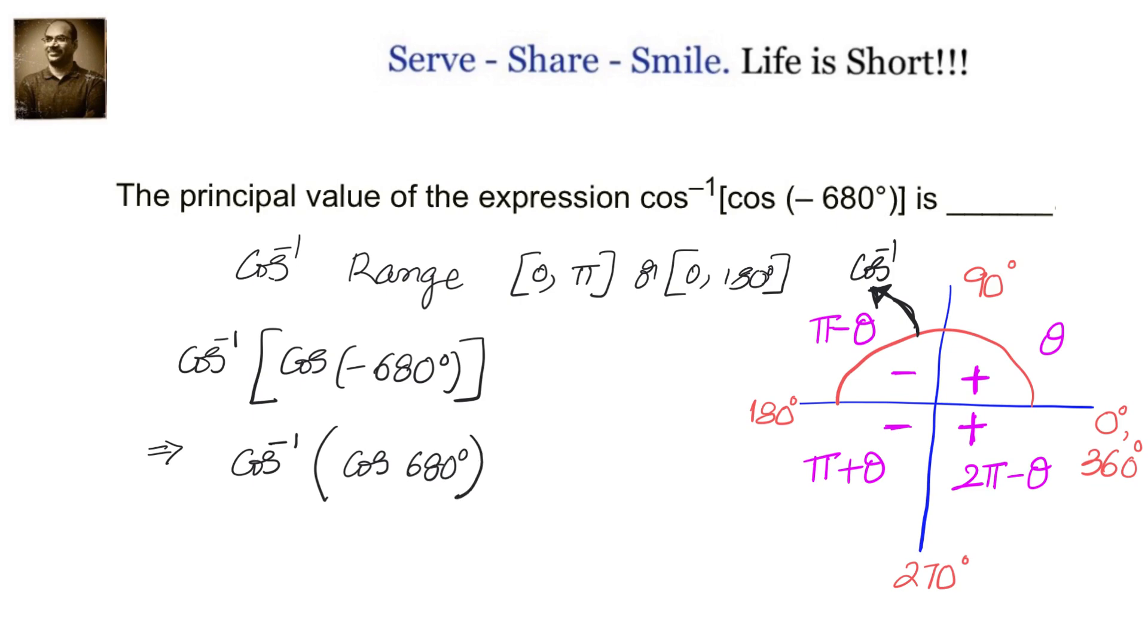680 degrees - we can divide that with 360 and see that 360 degrees will complete one revolution. Again, we are back to 0. 360 plus 320 is 680. That means we can write it as cos inverse of cos of 320 degrees.